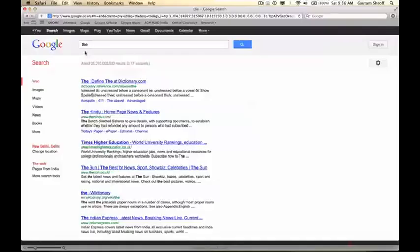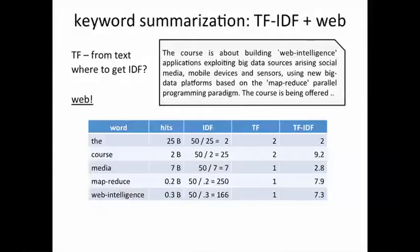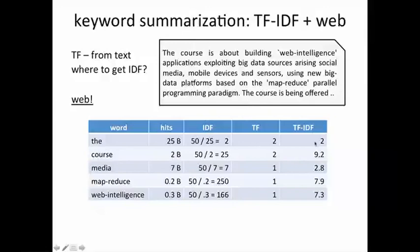Searching for 'the', we get around 25 billion results. Searching for 'map reduce', on the other hand, we get close to 200 million results. We can similarly calculate the number of hits we get for the other words in this paragraph. We compute the ratio of the number of hits with 50 billion, which is our estimate for the total number of documents on the web, to get the IDF before taking logs. And we take the log, multiply it by the frequency of the term in the paragraph itself, and we get a TF-IDF value.